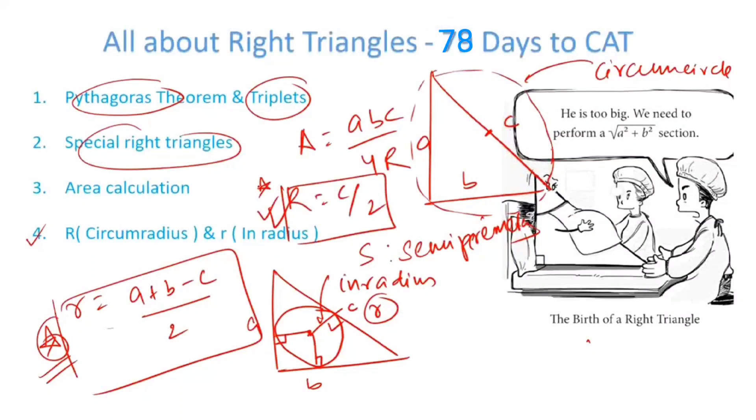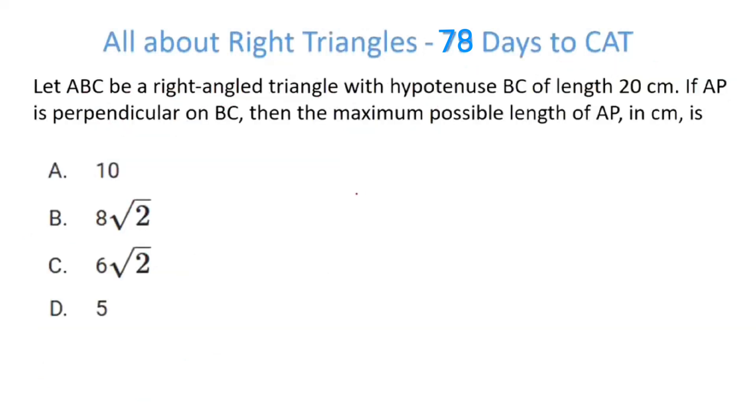Let's apply these concepts in a few questions that have been part of CAT in the previous years. Let ABC be a right triangle with hypotenuse BC of length 20 cm. AP is perpendicular on BC. What is the maximum possible length of AP?